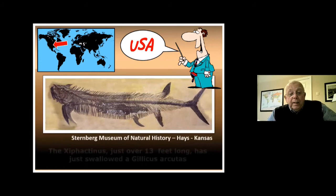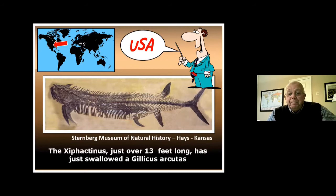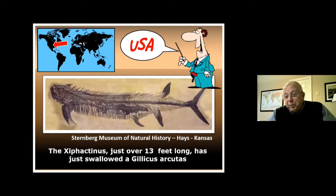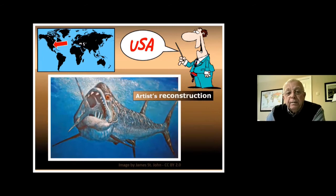This one is called the Xiphactinus — 13 feet long — in the Kansas Museum. It has just swallowed a Gillicus arcuatus; the creature inside its body hasn't even been digested yet — it's just been swallowed. One moment it sees small fry ahead, swallows it, and before it can even start to digest its prey it's covered by sediment and water and locked into the fossil record. There's the artist's impression of that event.